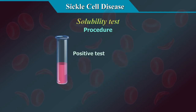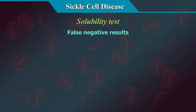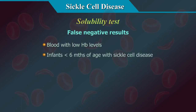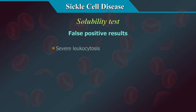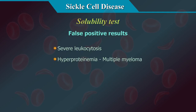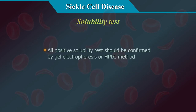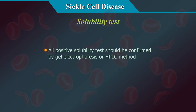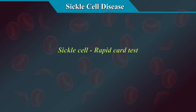Step 6: if the test appears positive, centrifuge at 1200 g for 5 minutes. A positive test will show a dark red band at the top, whereas the solution below will be pink or colourless. False negative results can occur with low haemoglobin levels, infants less than 6 months of age with sickle cell disease, or when HBS levels are less than 20%. False positive results can occur in severe leukocytosis and hyperproteinaemia such as multiple myeloma, or in the presence of unstable haemoglobin variants. All cases of positive sickle test should be confirmed by gel electrophoresis or HPLC method.